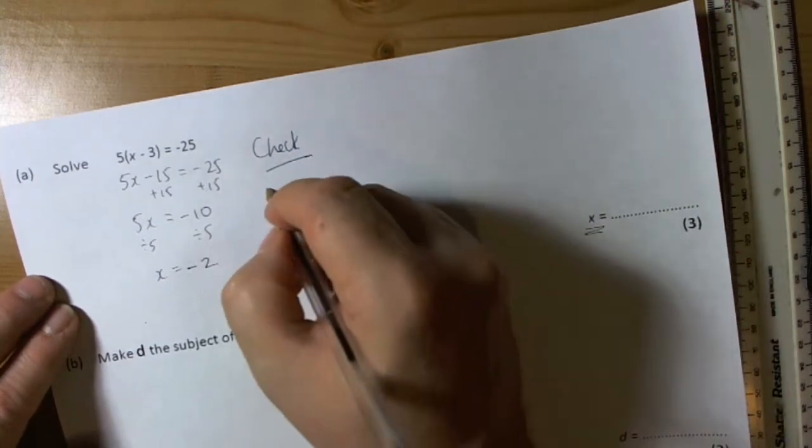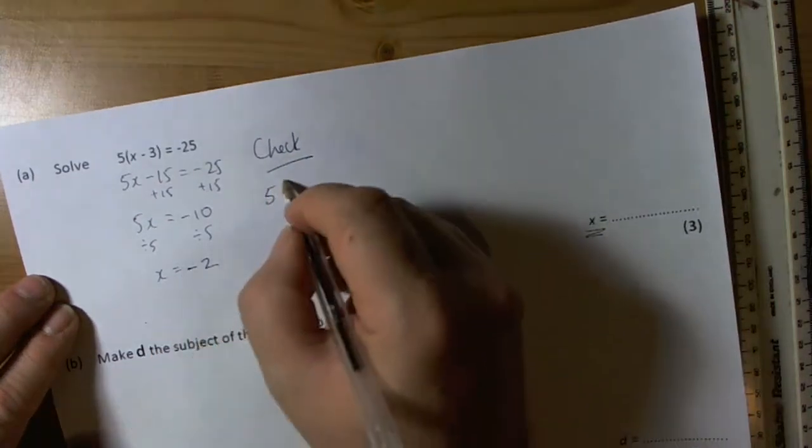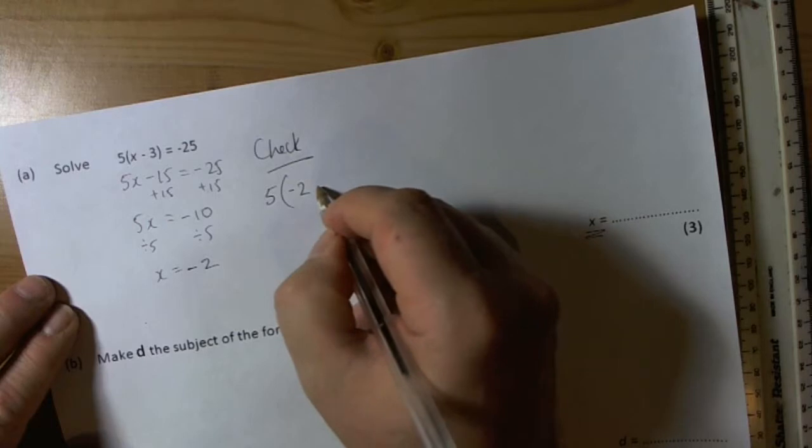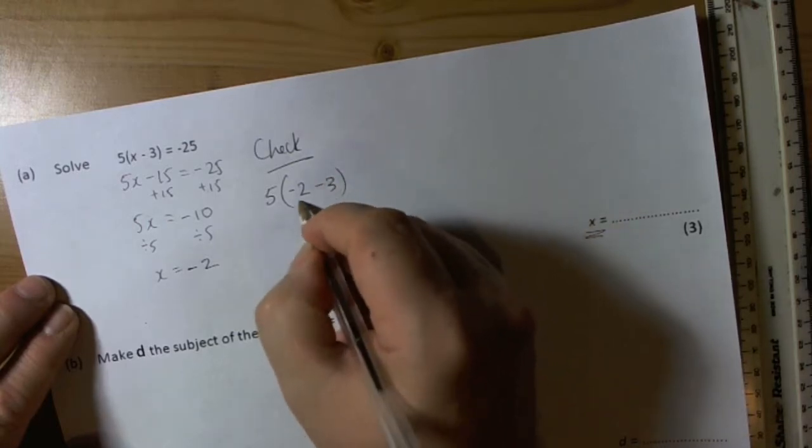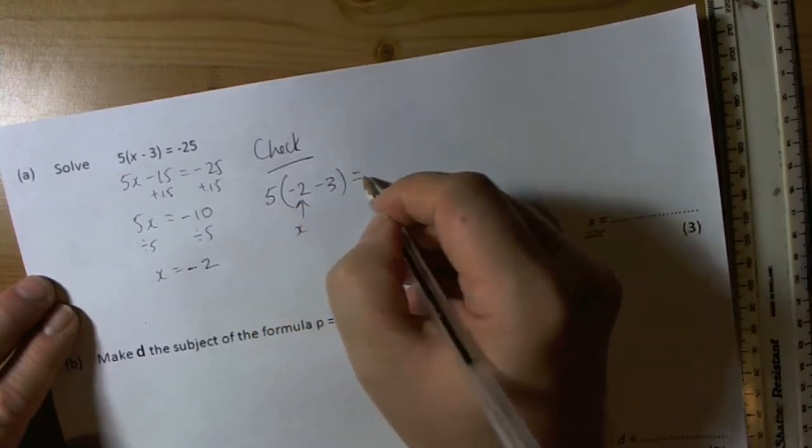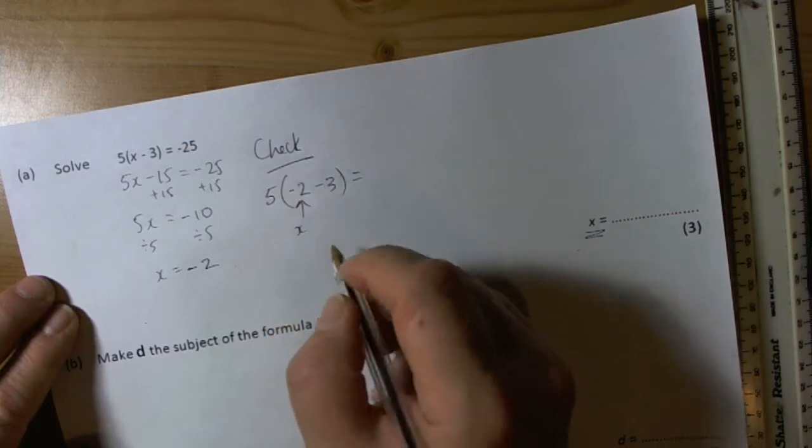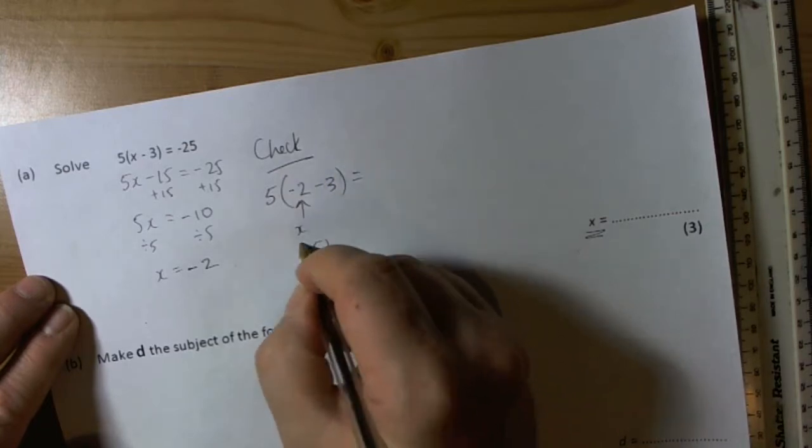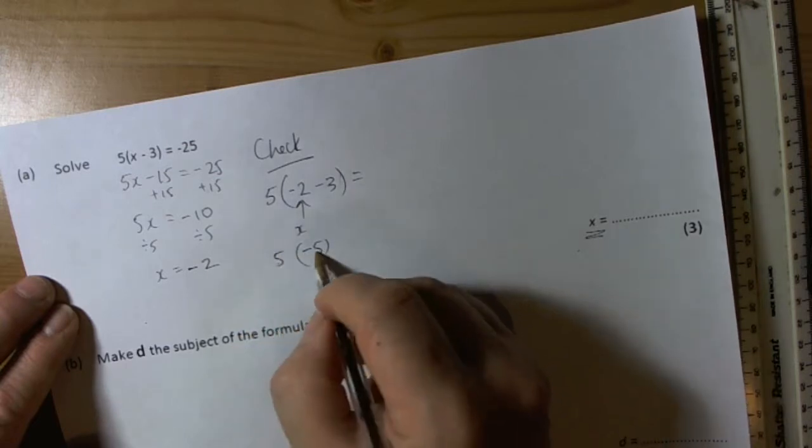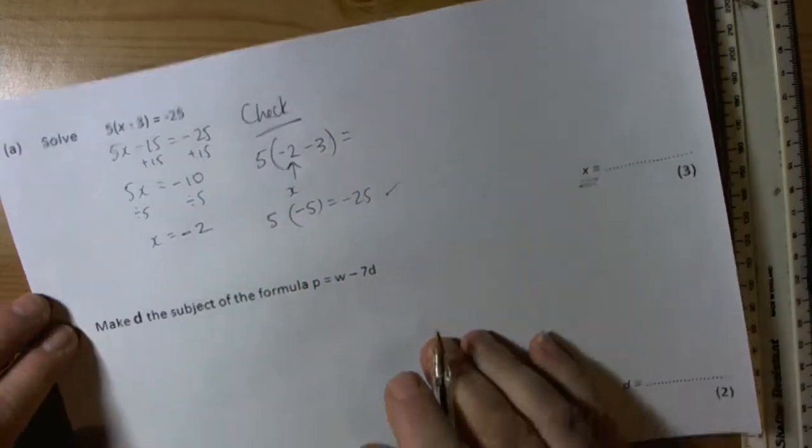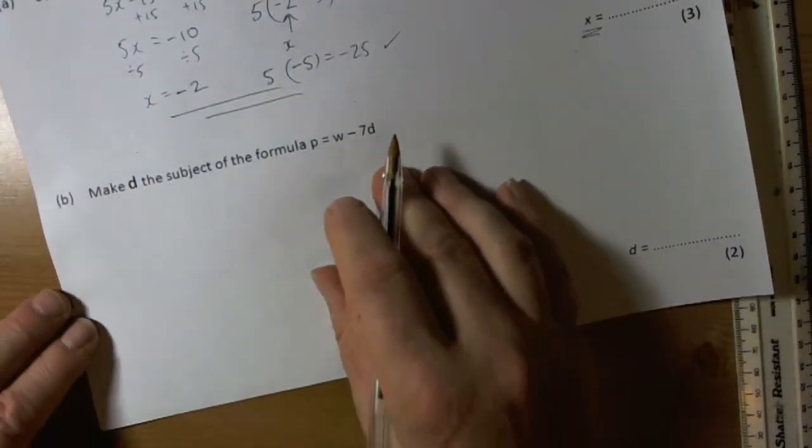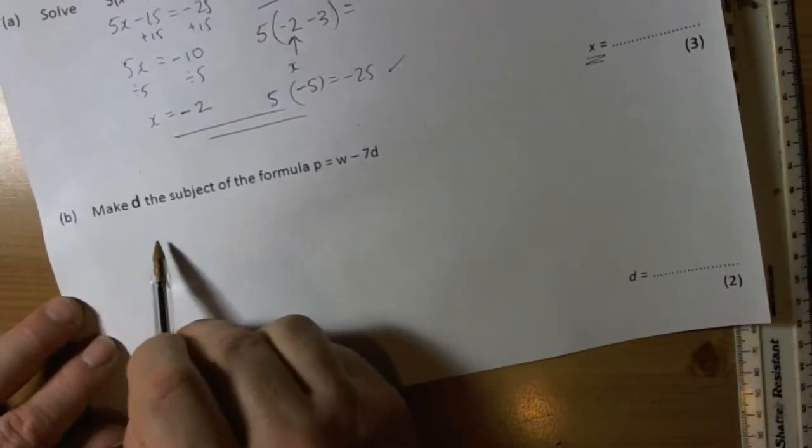All algebra should always be checked, so we recognize that we found the value of x, so we can replace x with negative 2. I'll do the bracket first, so negative 2 take away 3 more is negative 5. This tells me to do 5 lots of negative 5, that equals negative 25, so we can be quite happy that worked.